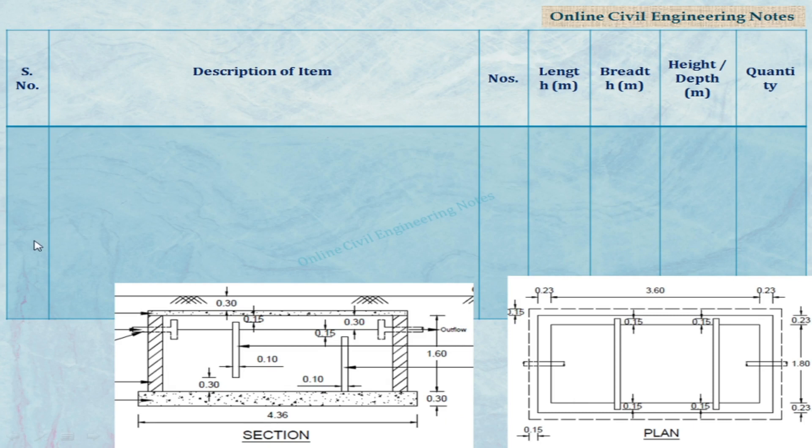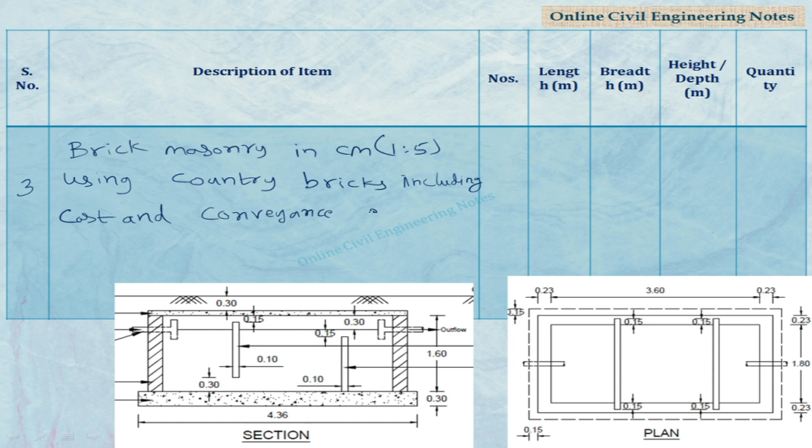Write the item details in description. Item number is 3. Brick masonry in cement mortar 1 is to 5, using country bricks including cost and conveyance etc. complete.